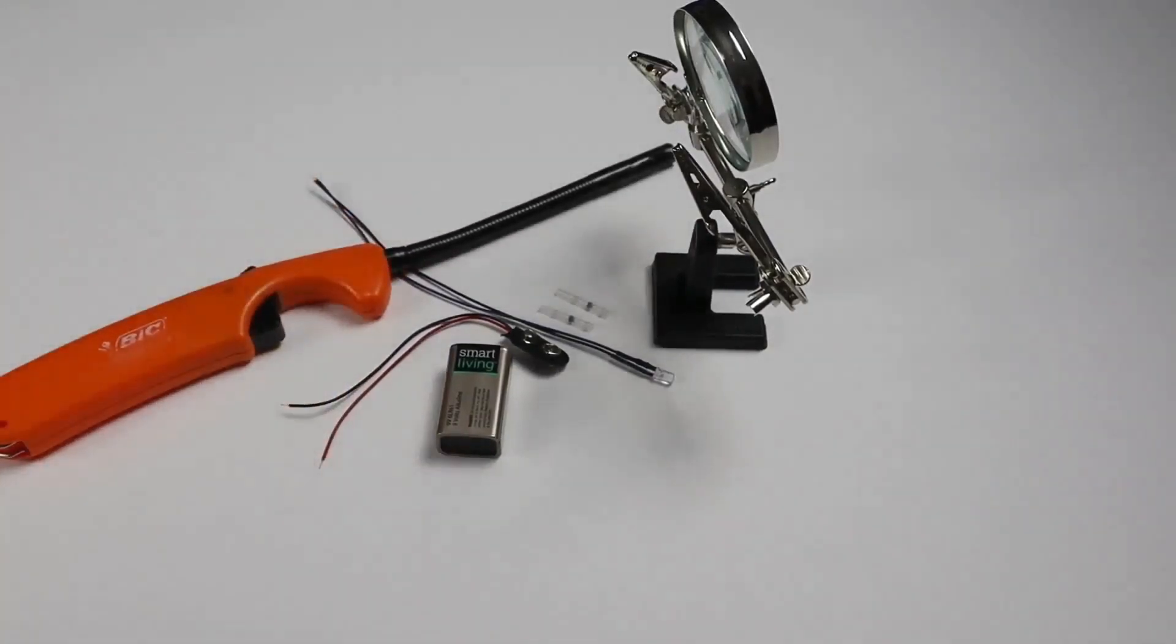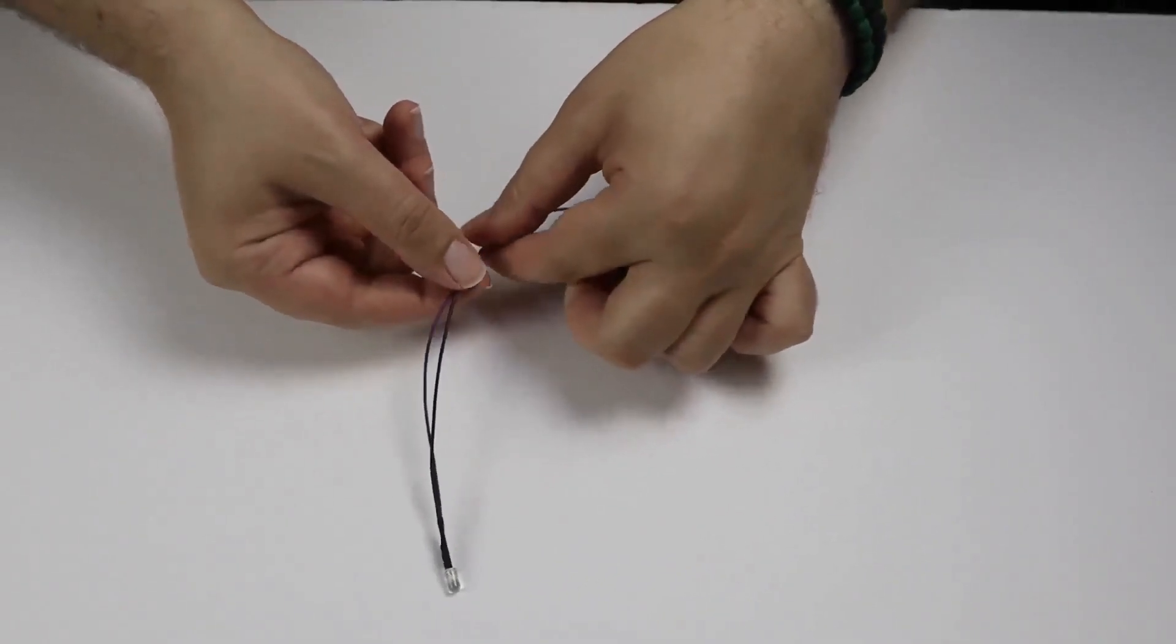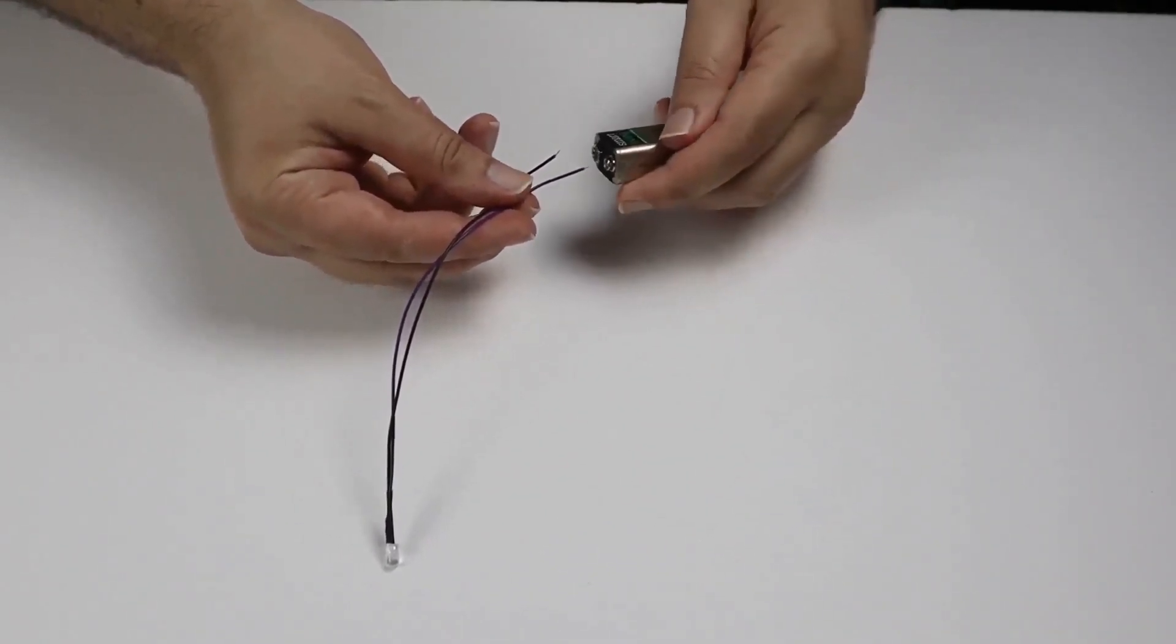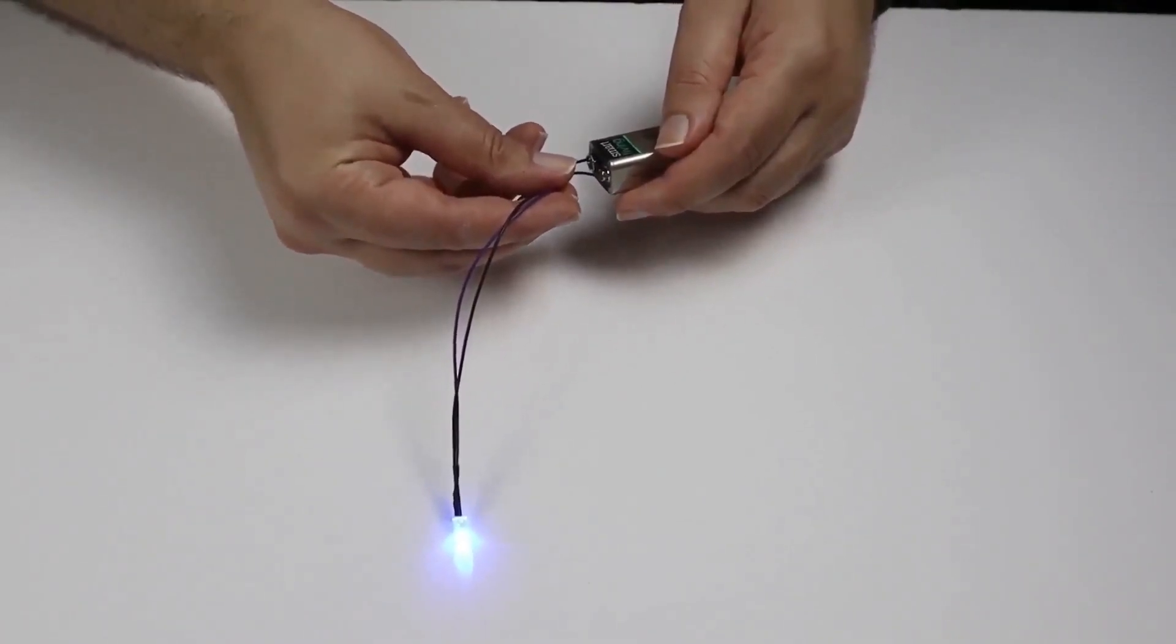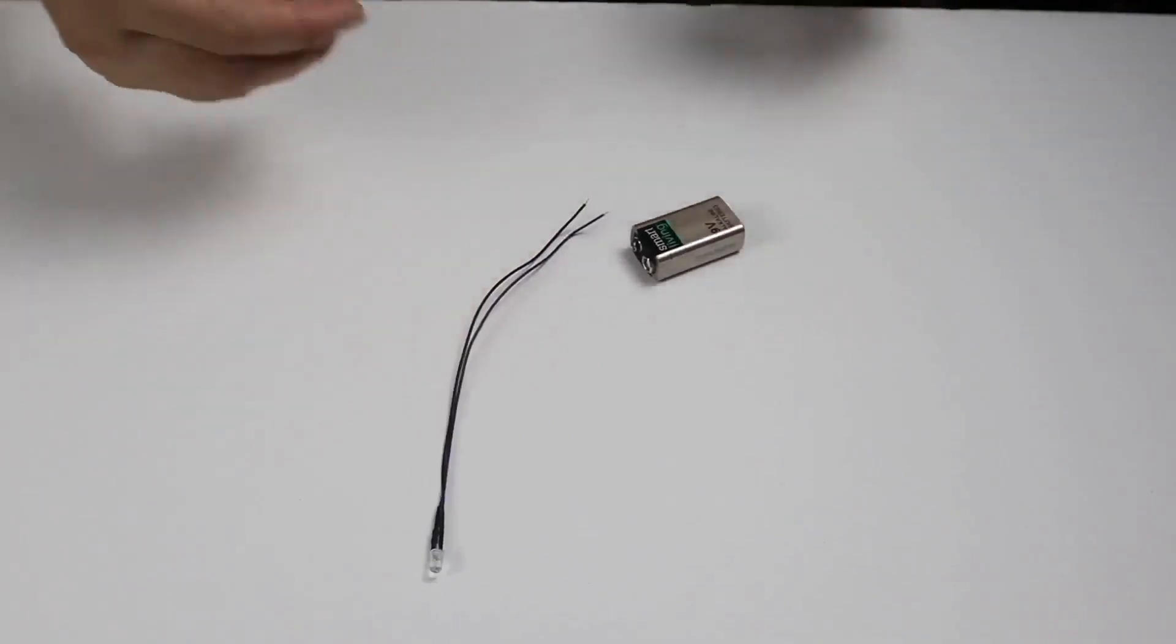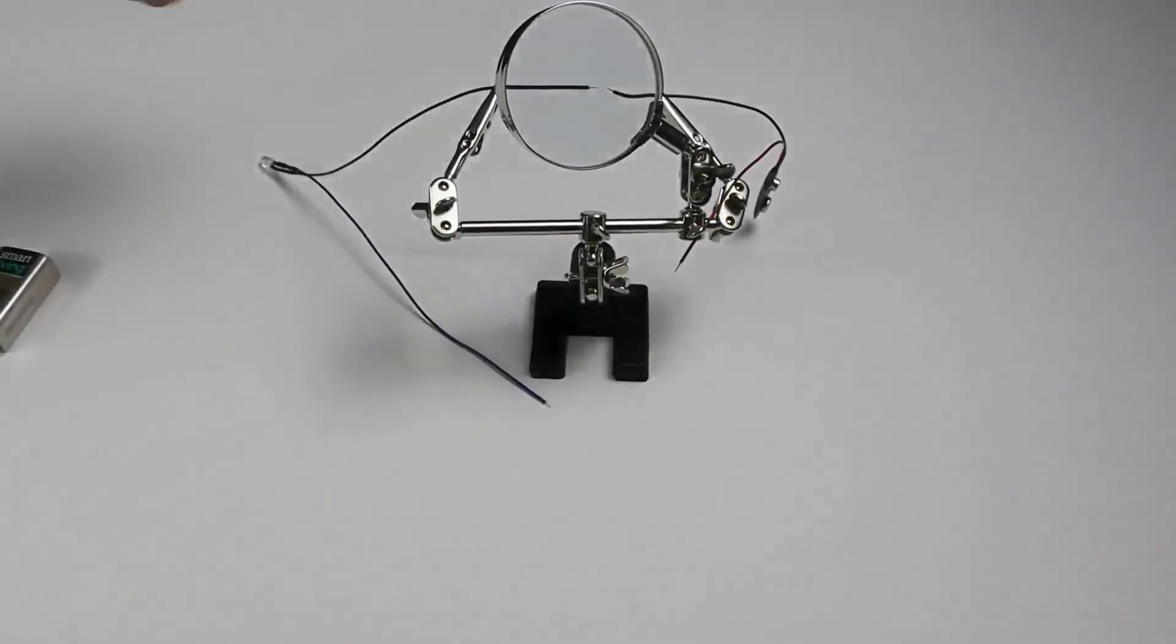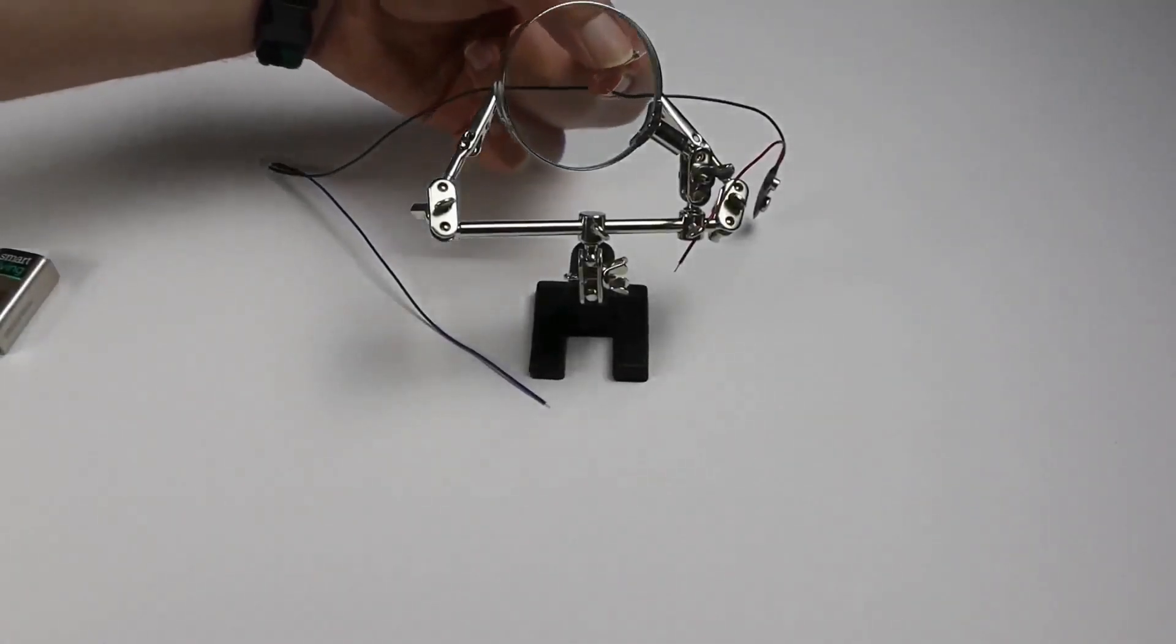So first thing, test the LED to make sure that it's good. It's pretty rare for them to be dead, especially right out of the bag, but it is possible. So just test it by connecting it to the leads on the battery and when it lights up you know you're good. Next, set up the black wire so that only the exposed wires are touching each other and slip one of the heat shrink connectors onto one side.